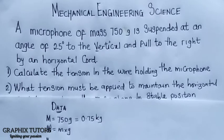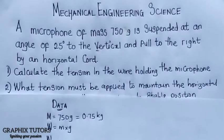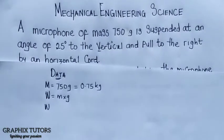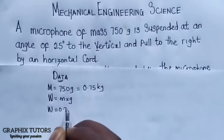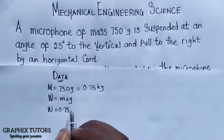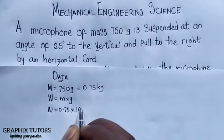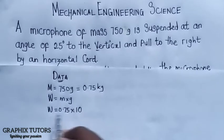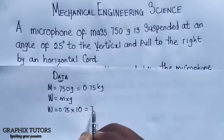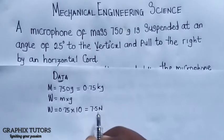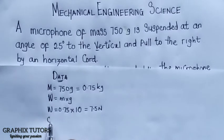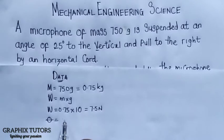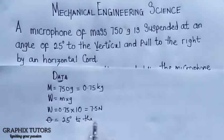So the weight will be our mass, which is 0.75, and we take gravity to be 10 meters per second squared. When you multiply both of them, you get the weight as 7.5 Newtons, acting downward. The angle given is that it is inclined 25 degrees to the vertical.